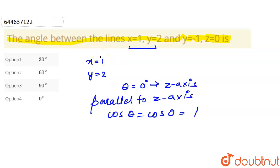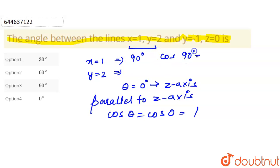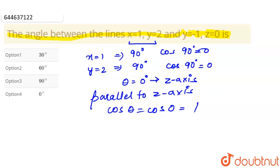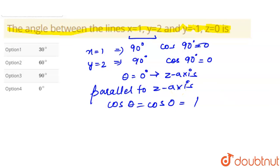Since it is parallel to the z-axis, the direction cosine with the z-axis is cos(0) = 1. Since the line has coordinates only in x and y, it makes 90 degrees with both the x-axis and y-axis, so cos(90°) = 0 for both.